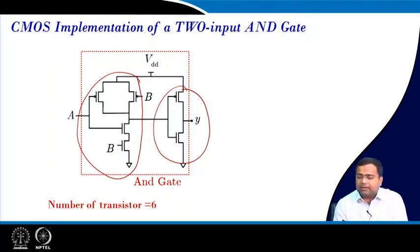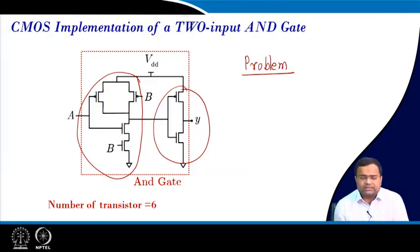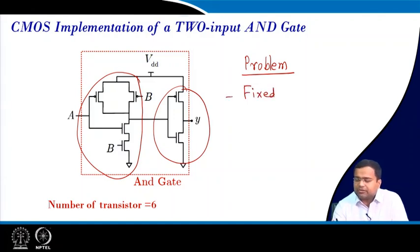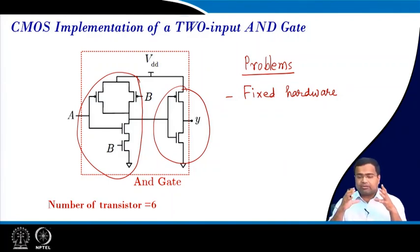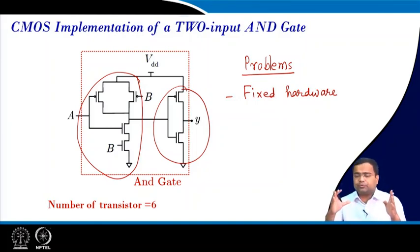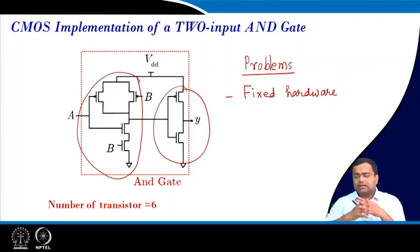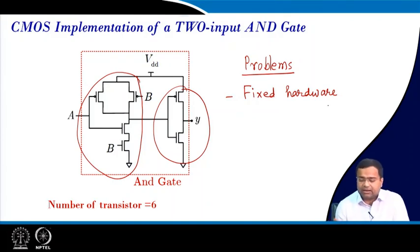But what is the problem? This architecture is fixed hardware. That means we cannot use this hardware for anything other than AND purpose — it is dedicated only for AND. Any other two-input logic function cannot be implemented other than AND operation. That is why this is a fixed hardware, but it requires the minimum number of transistors.